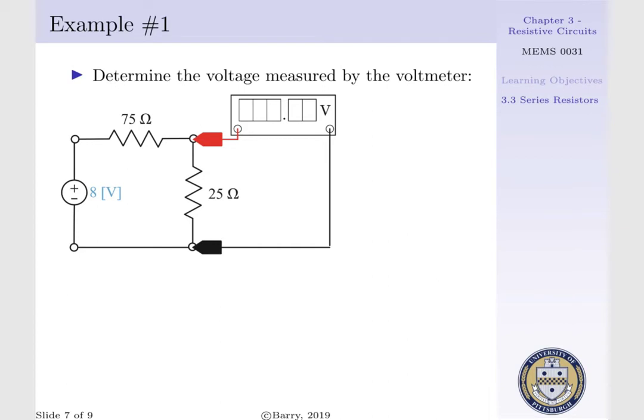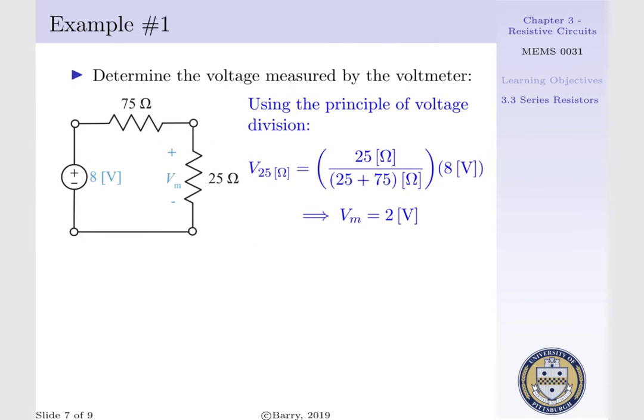Our voltmeter has a red terminal at the top of our 25 ohm resistor and a black terminal at the bottom. Thus our voltage potential goes from positive to negative as we progress from the top to bottom where we designate V sub M or V sub 25 as our voltage potential across our 25 ohm resistor.